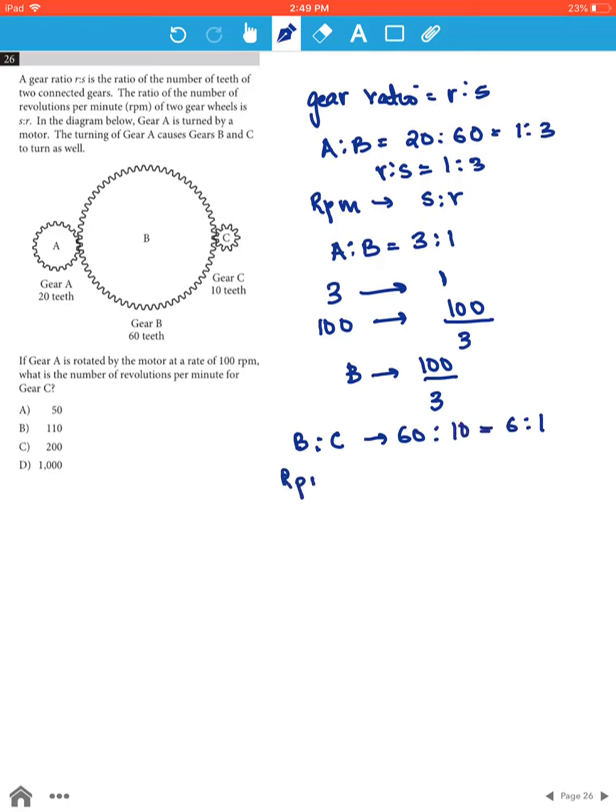Therefore the RPM will be 1 to 6. That means for every 1 revolution, it goes 6 revolutions. So for every 100 over 3, it will go 100 over 3 times 6, which equals 200 revolutions per minute for gear C.